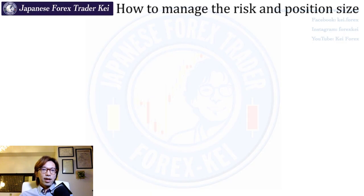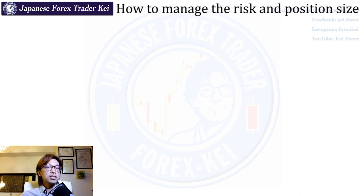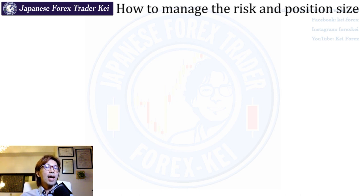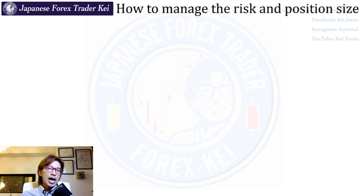Are you trading with the correct position sizing? How do you determine the position sizing on each trade? For example, when someone says they bought a pound dollar with 0.1 lot, and I ask why they placed 0.1 lot, they say they placed a relatively smaller lot to avoid the risk. To me, that's not how you avoid the risk because it's not logical enough.